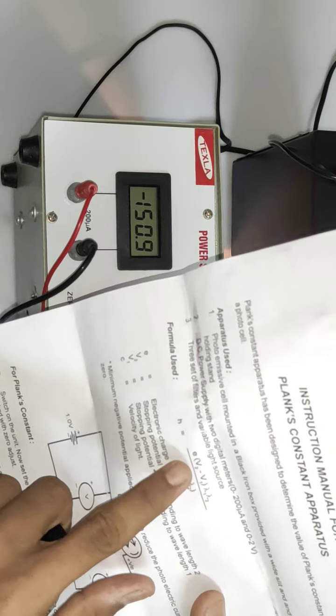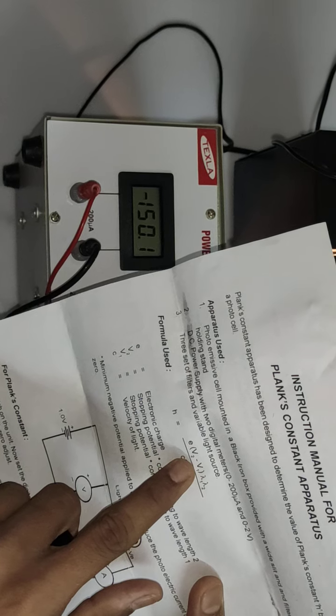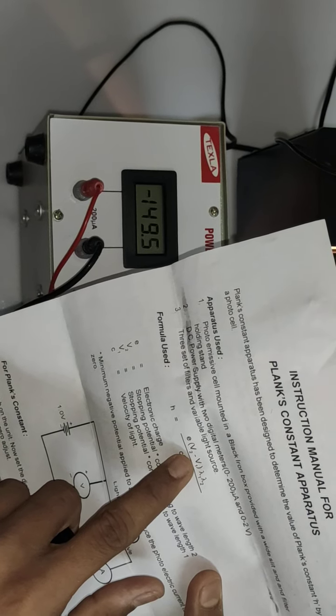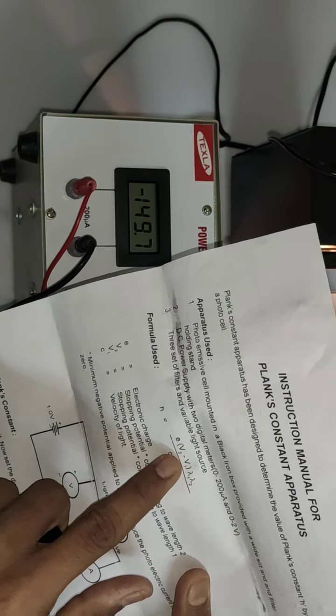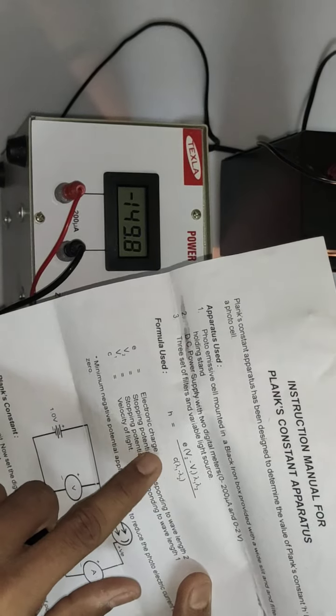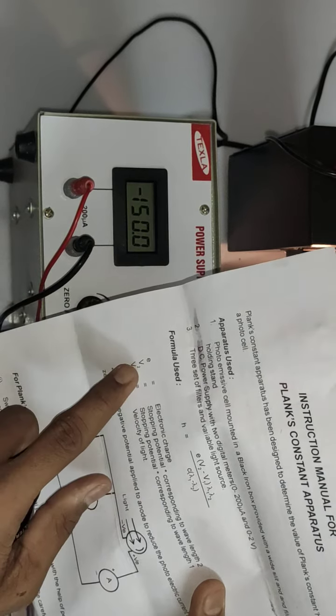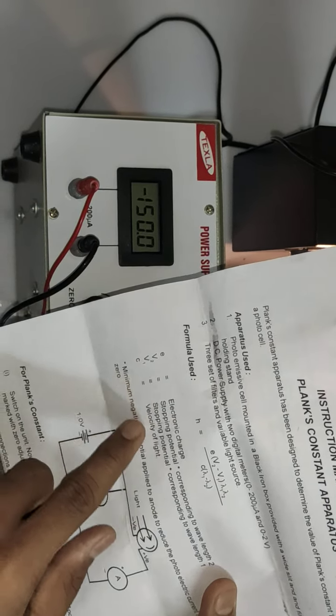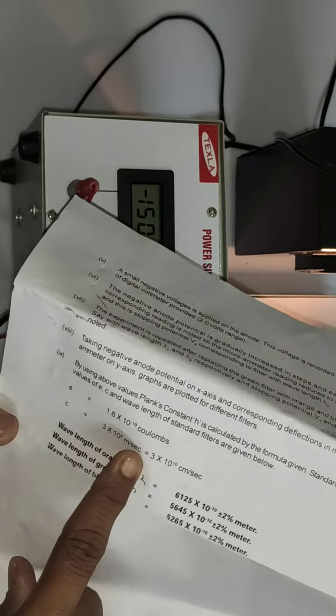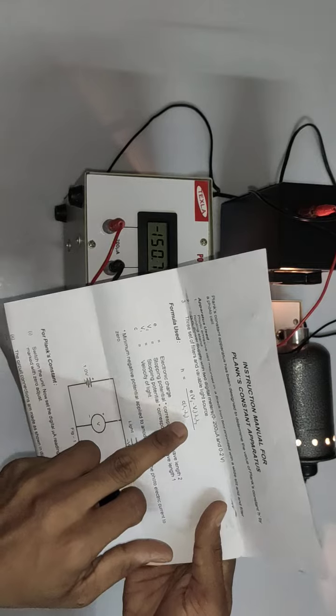The formula is h equals e times v2 minus v1. That is, v2 minus v1 is the stopping potential voltage of color filter 2 minus filter 1. Lambda 1, lambda 2, c is velocity of light. Again, lambda 1 minus lambda 2, with c velocity of light times lambda 1 minus lambda 2. Charge of electron e and velocity of light c values are also given in the manual.